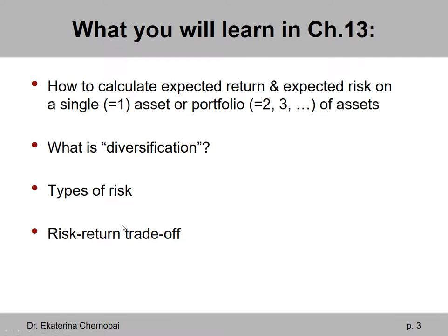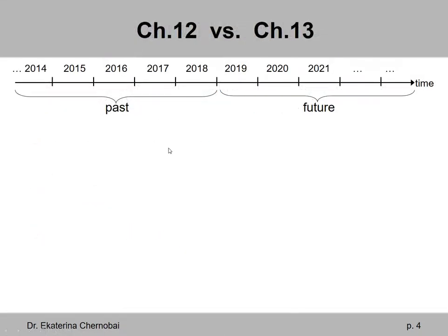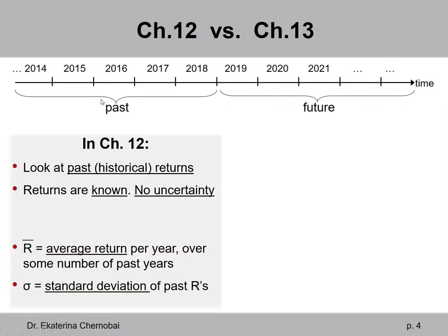Let's compare Chapter 12 and Chapter 13. In Chapter 12, we were basically looking at historical data — talking about the past. We looked at historical returns which were all known, so there was no uncertainty about what may happen because it already happened. We calculated the average return, denoted by R-bar, and also calculated the standard deviation of past returns, denoted by sigma, where sigma squared is variance.